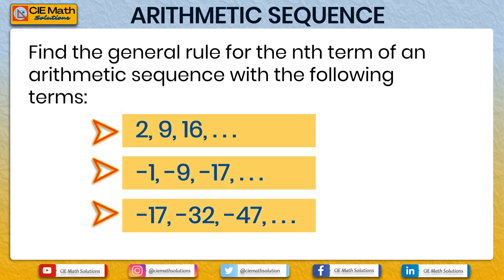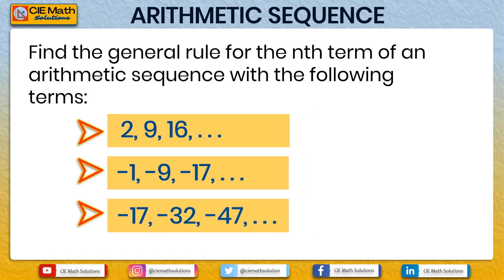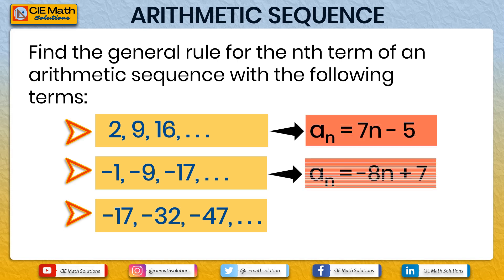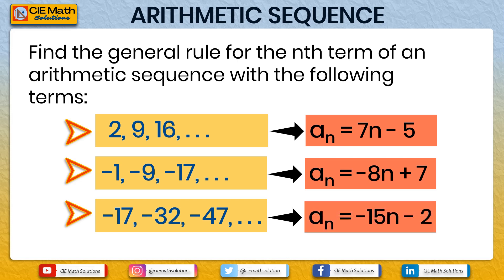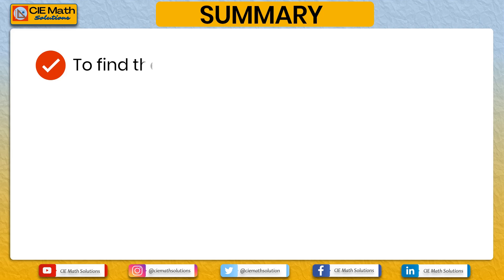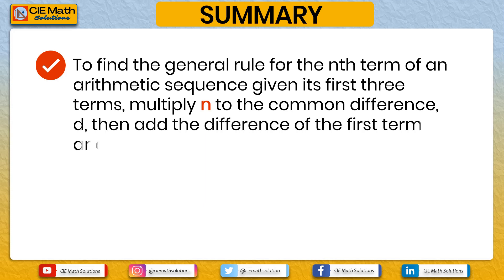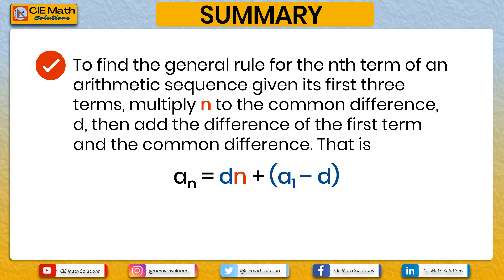To summarize the answers: for the sequence 2, 9, 16, the general rule is an = 7n − 5; for −1, −9, −17, it is an = −8n + 7; for −17, −32, −47, it is an = −15n − 2. If you got all answers correct, congratulations! To find the general formula for the nth term, multiply the common difference by n and add (a1 − d). That is, an = dn + (a1 − d).